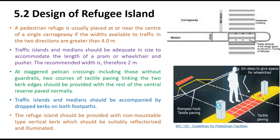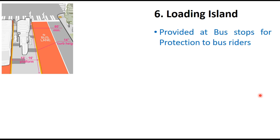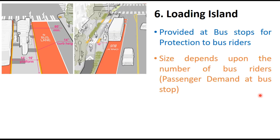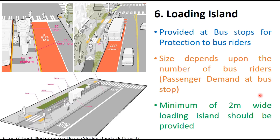The sixth type is loading islands, provided at bus stops for protection to bus riders. The size depends on the number of bus riders — that is, passenger demand at the bus stop — and a minimum of 2-meter-wide loading island is recommended wherever necessary.